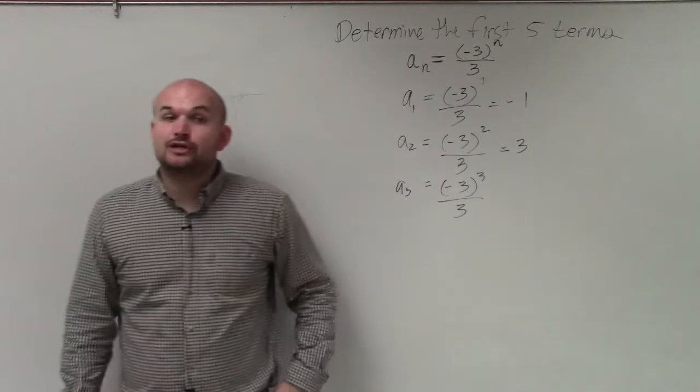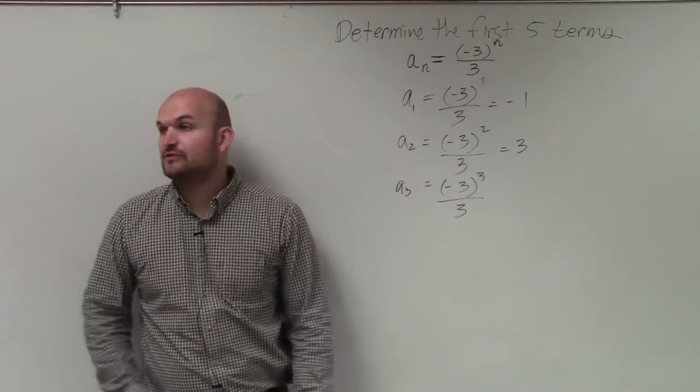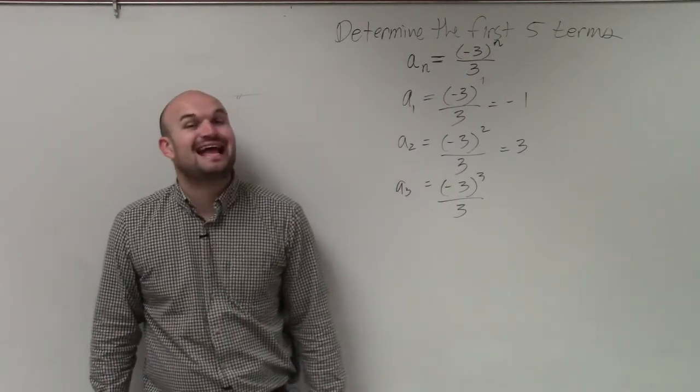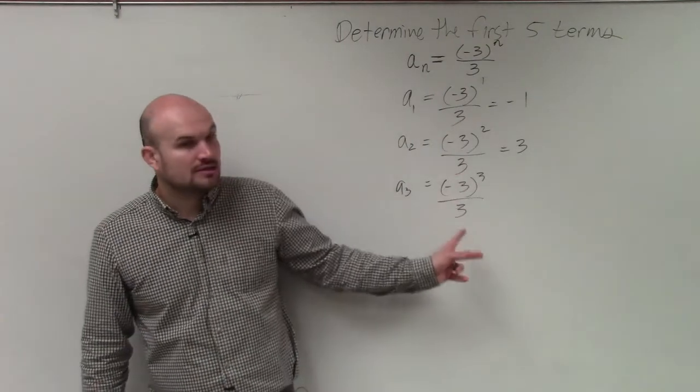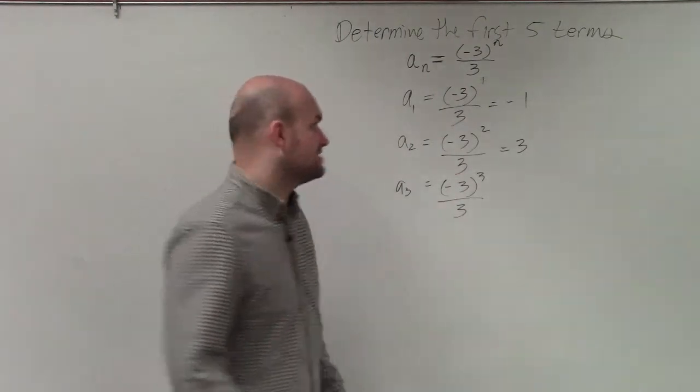Then we have negative 3 cubed, which is negative 3 times negative 3 times negative 3, which is negative 27 divided by 3, which is going to give us negative 9.